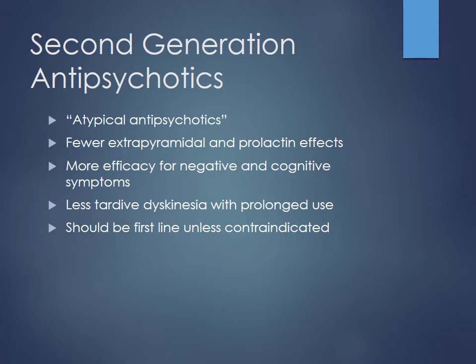Second-generation antipsychotics — atypicals — have fewer extrapyramidal and prolactin effects. They also have more efficacy for both negative and cognitive symptoms, though they may not be as potent for positive symptoms as haloperidol. They produce less tardive dyskinesia with prolonged use and should be used as first-line unless contraindicated. First-generation IM agents were historically used for acute psychotic breaks, but now more IM second-generation options are available.